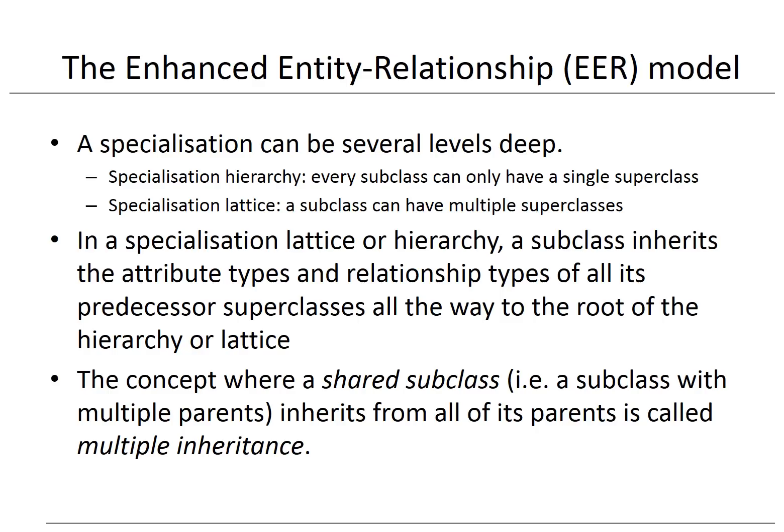A specialization can be several levels deep — a subclass can again be a superclass of another specialization. In a specialization hierarchy, every subclass can only have a single superclass. In a specialization lattice, a subclass can have multiple superclasses. In both cases, a subclass inherits the attribute types and relationship types of all its predecessor superclasses all the way up to the root. The concept where a shared subclass with multiple parents inherits from all of its parents is called multiple inheritance, and this can occur in a specialization lattice.